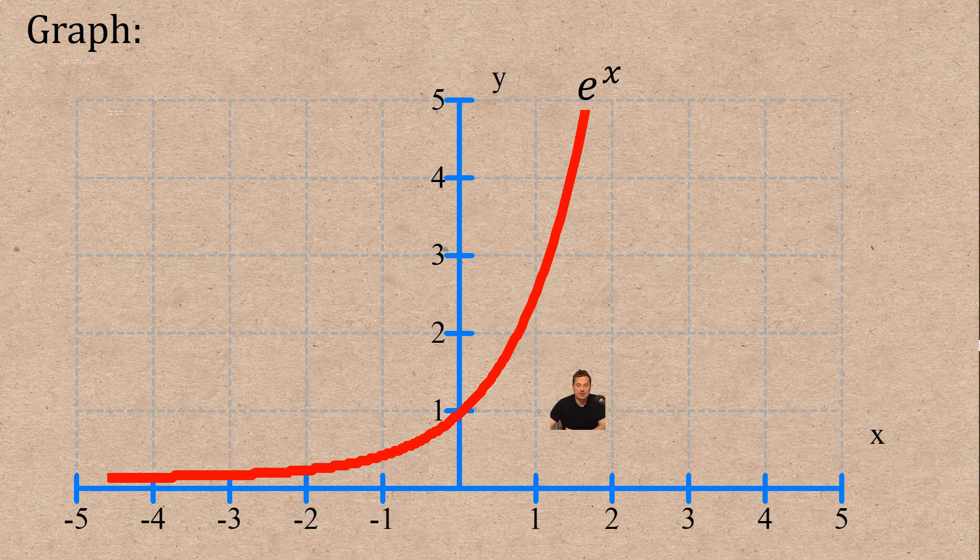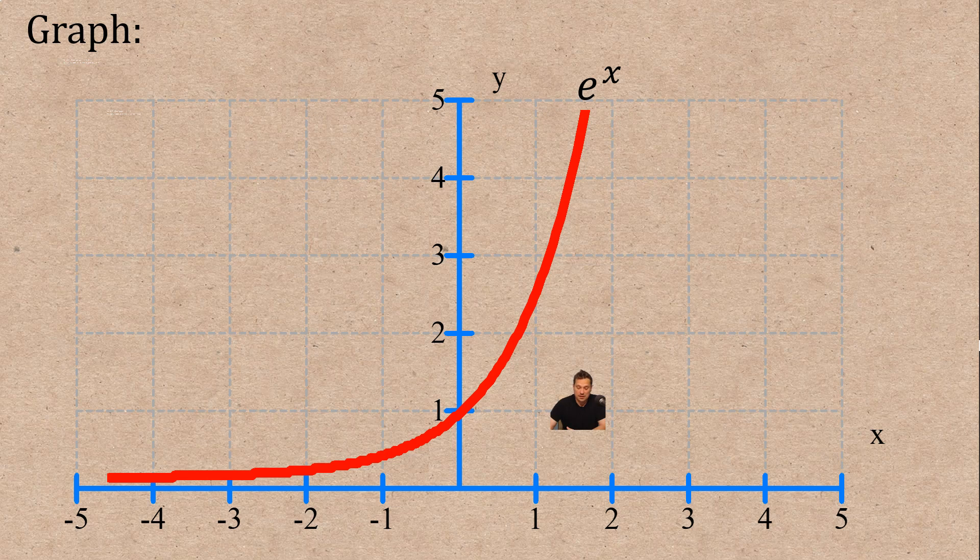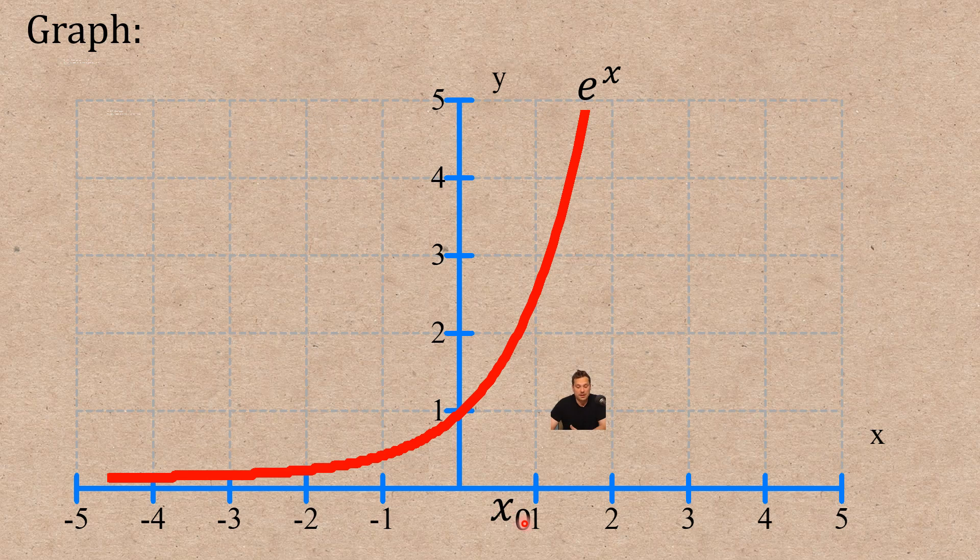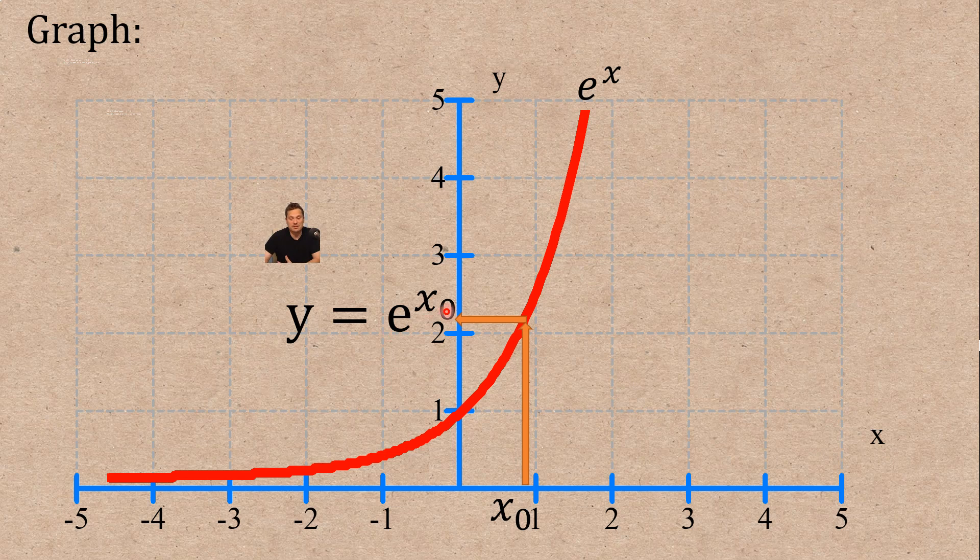In math a particular value that you're plugging in is often given a subscript. So in this case what I mean is this. Take a look. It says x sub zero on the bottom here. That's a particular value of x. We can indicate plugging that value in by drawing like a little arrow. So the arrow will kind of hit the curve and then bounce off the curve and then head over the y-axis on that side right here. So this is y equals e to the x sub zero. So e to the x sub zero is very important.